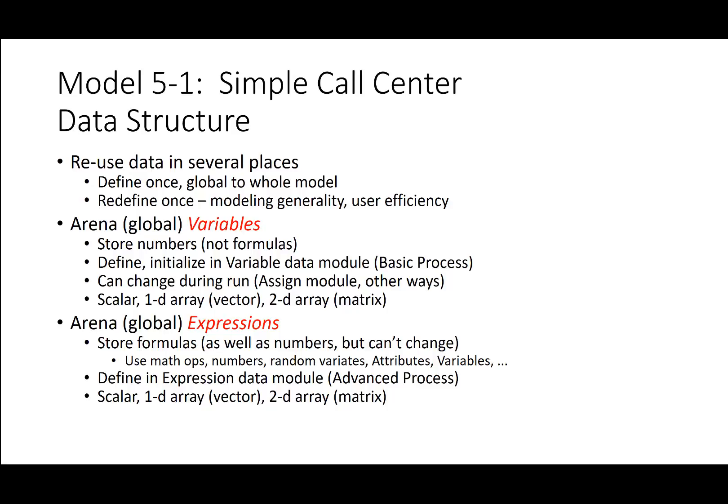For the data structure, you can reuse data in several places — define it once and it is global for the whole model. You can also redefine it for modeling generality and user efficiency. Global variables within ARENA store numbers, not formulas. You define initializing variable data in the basic process model, and then change them during the run through the assign module. The scalar, 1D array vector, or 2D array matrix are also global variables.